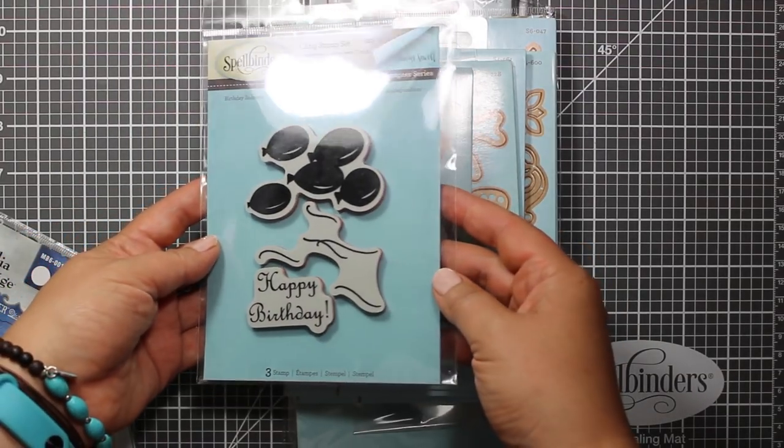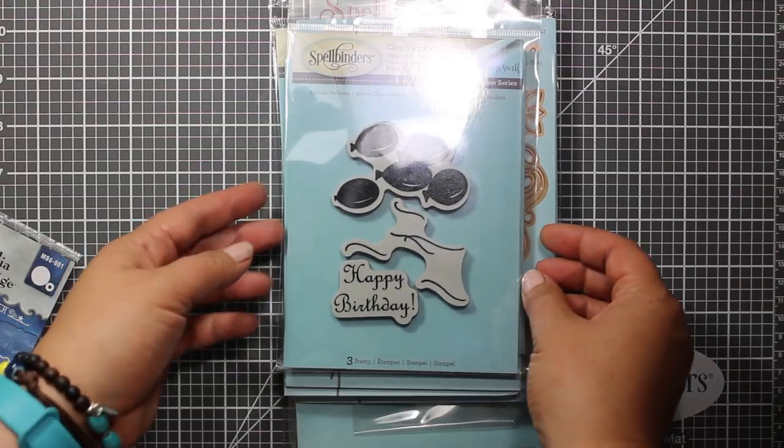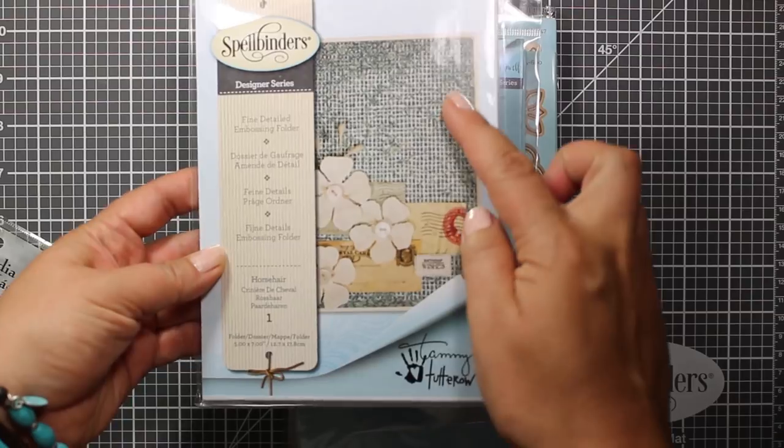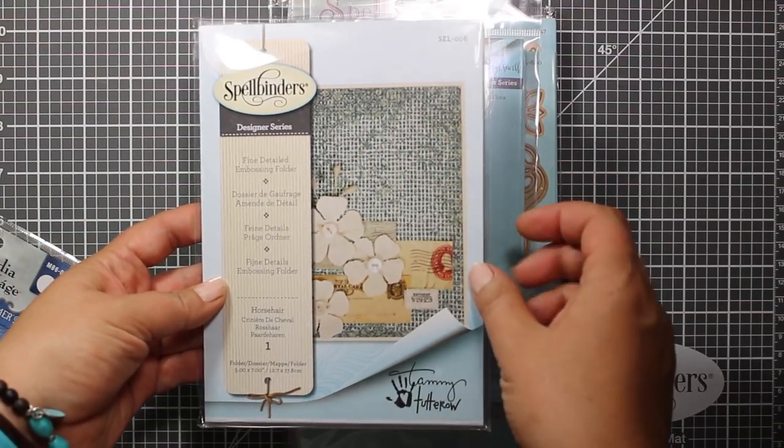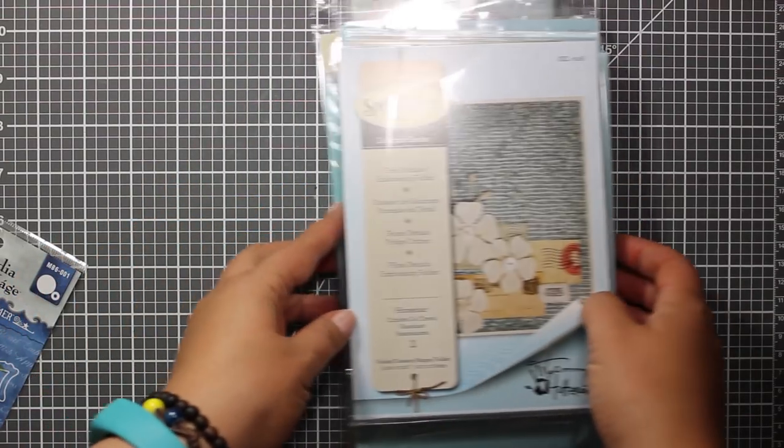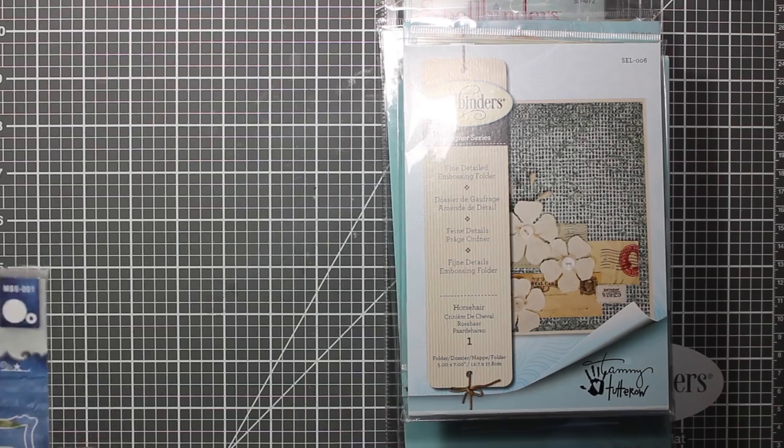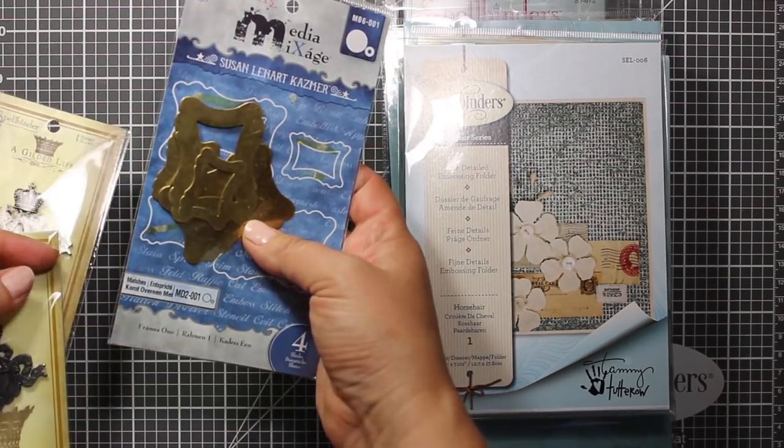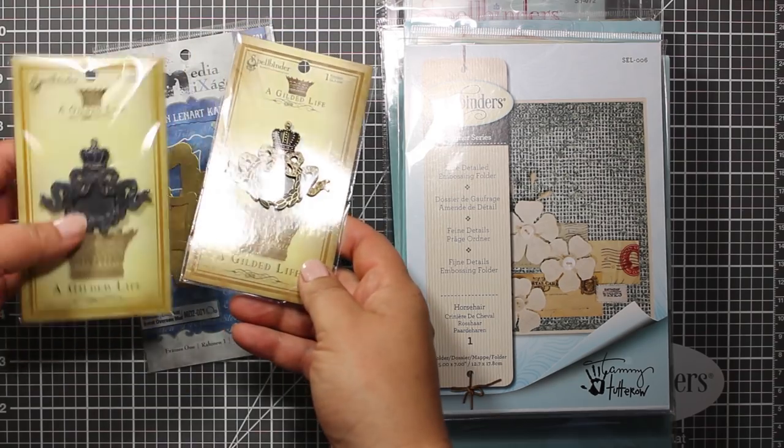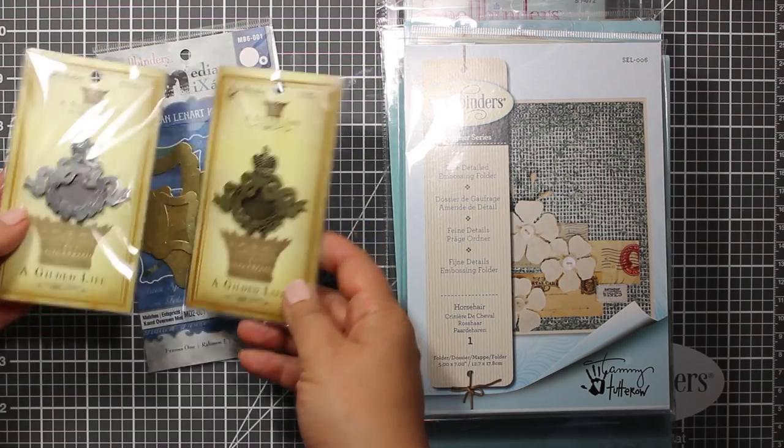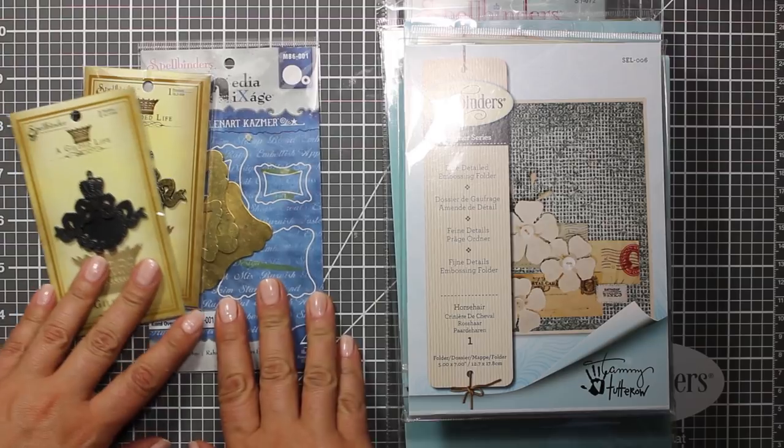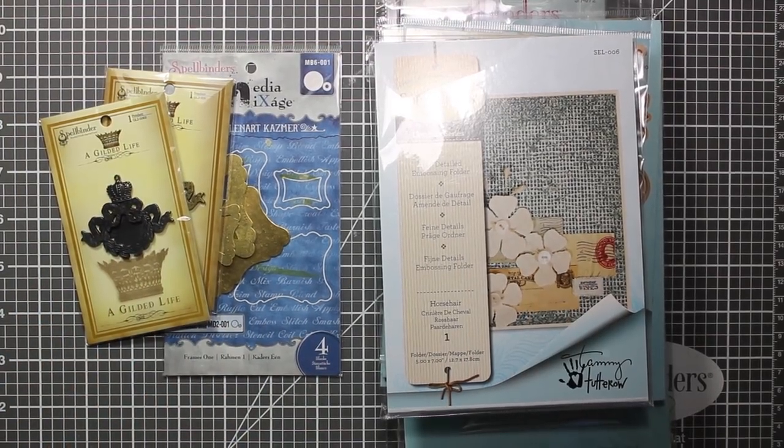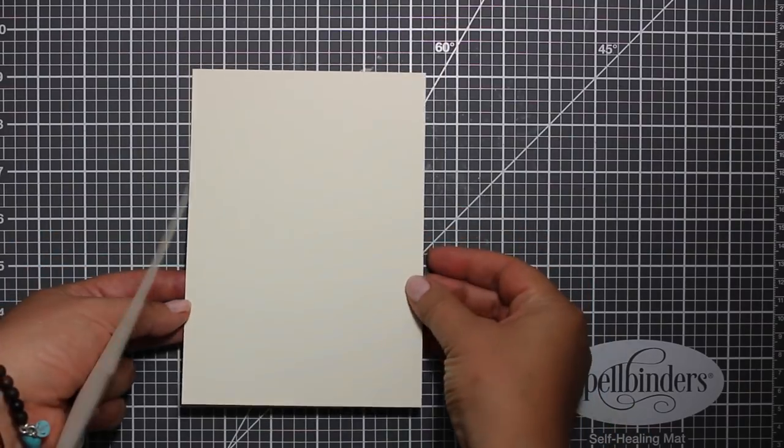There's also a stamp set included. It's called Birthday Balloons. And there is also a 5 by 7 embossing folder that is called Horse Hair. That's a very nice burlap texture. And there are also some dimensional embellishments like those metal plates and these crowns and wreaths. So there are 8 dies, 1 stamp set, 1 folder and some embellishments. And now let's move on to the project.